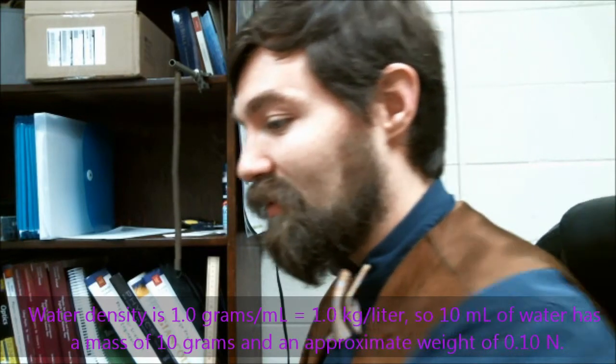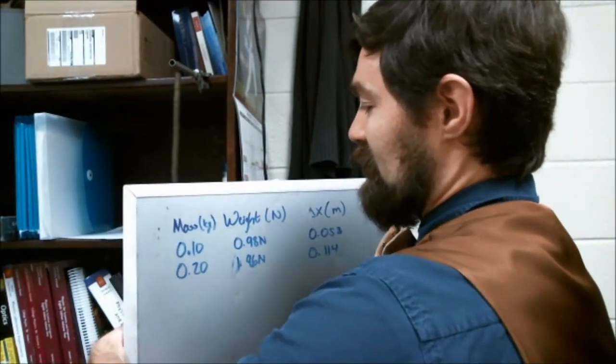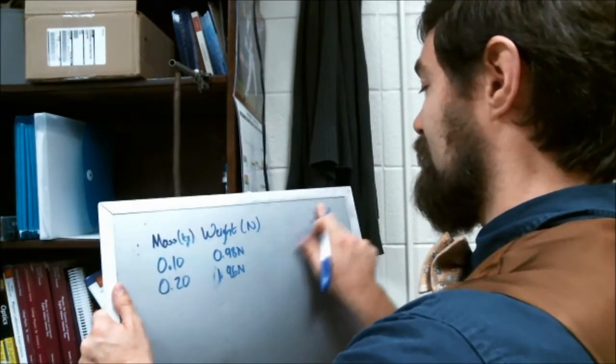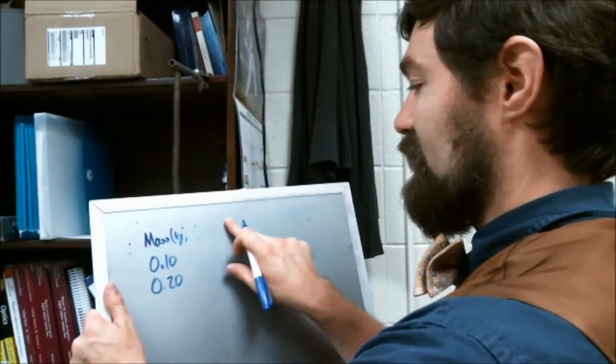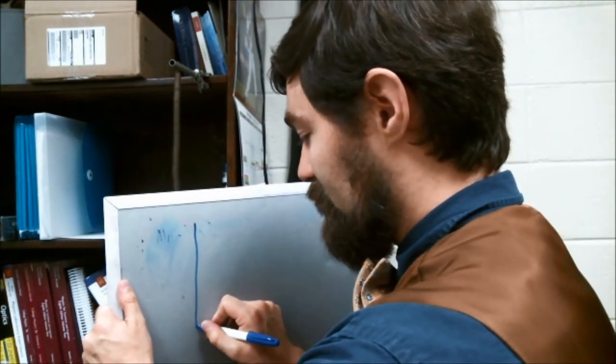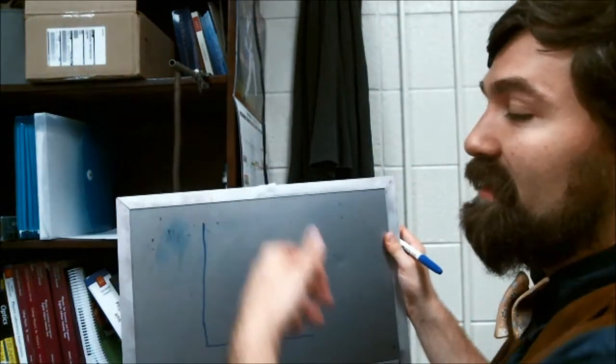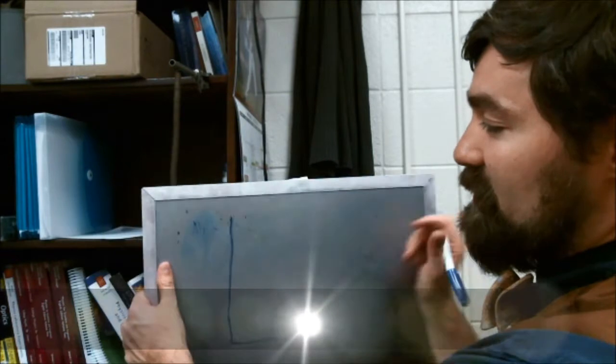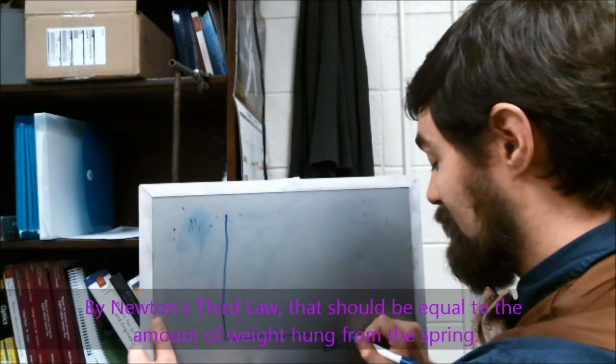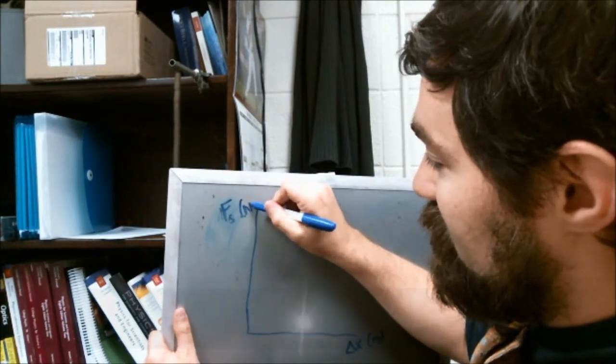Once you get enough data points you're going to make a graph which has on one axis the force that you've added—that's how much weight you're adding to this spring—and on the other axis how much this spring stretches by. What we're actually wanting to know is how much force this spring is applying to the weight that we've hung from it. So we're going to put delta x on the x-axis and put force from the spring in newtons on the y-axis.